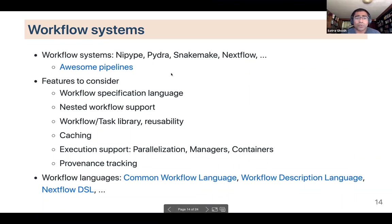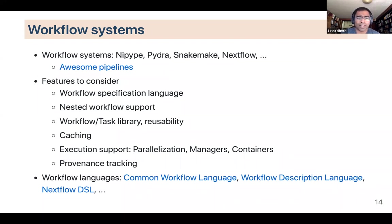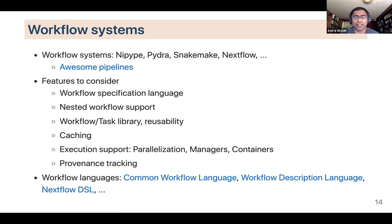There are many workflow systems out there. In this tutorial we'll cover NiPype and Pydra, but Snakemake and Nextflow are two others. For a full list, go to the 'awesome pipelines' repo — it lists over 100 data flow systems. You might want to consider different features: what language are you writing your data flow in — a domain specific language or a standard language like Python? Does it provide nested workflow support?